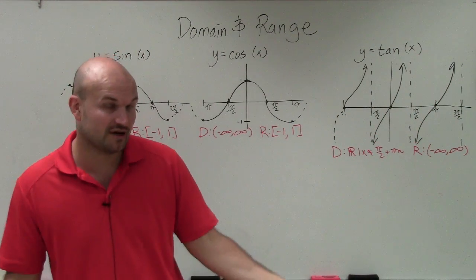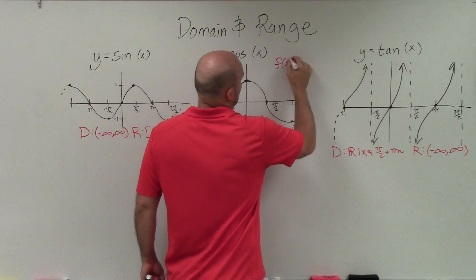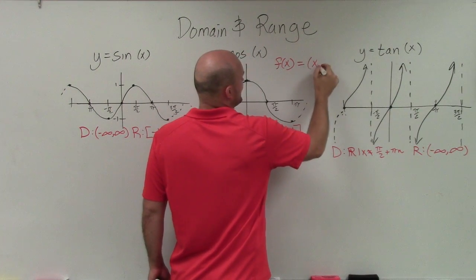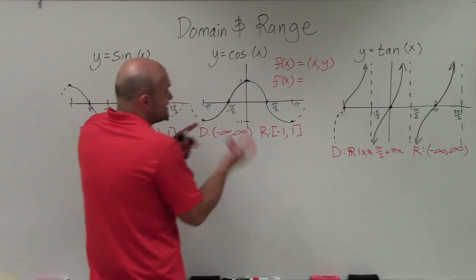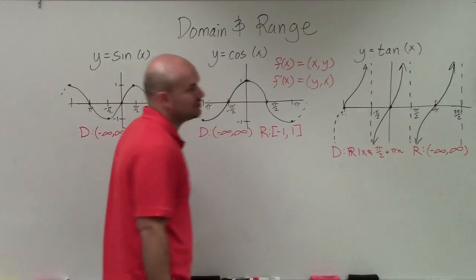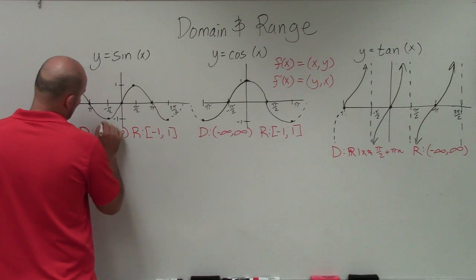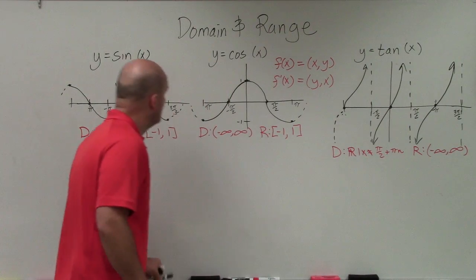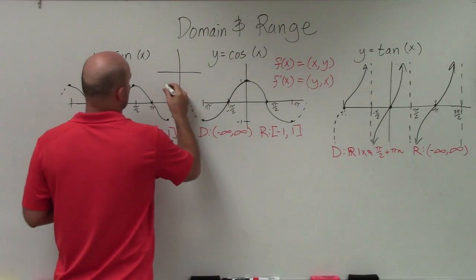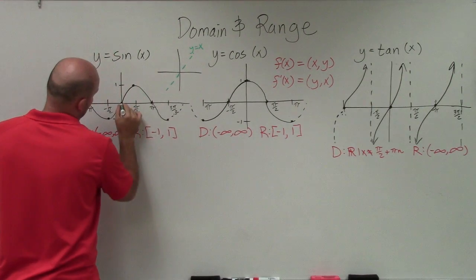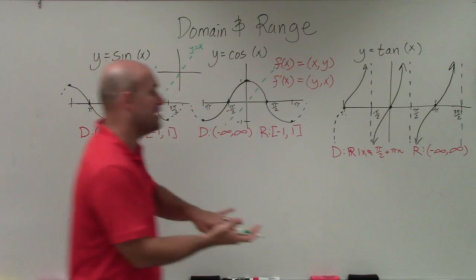Now we've got the domain and range of our trigonometric functions — let's find the inverse. Remember: if f(x) has coordinate points (x, y), then the inverse of that function swaps those points to (y, x). Another way to find the inverse graphically is that the points are reflected about the y = x line. So for each of my functions, I can reflect the graph about that y = x line.